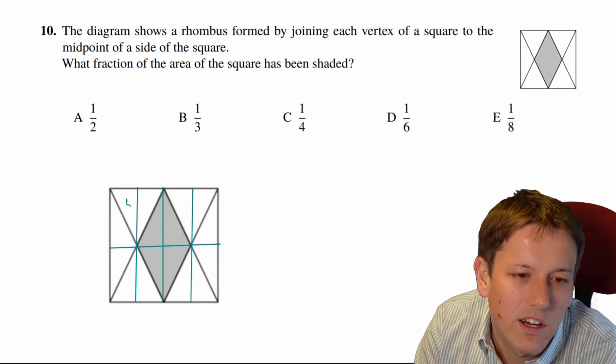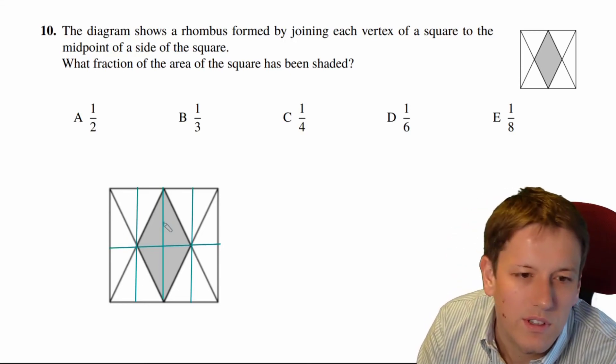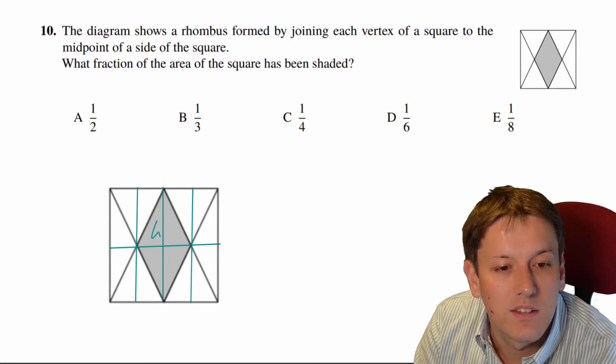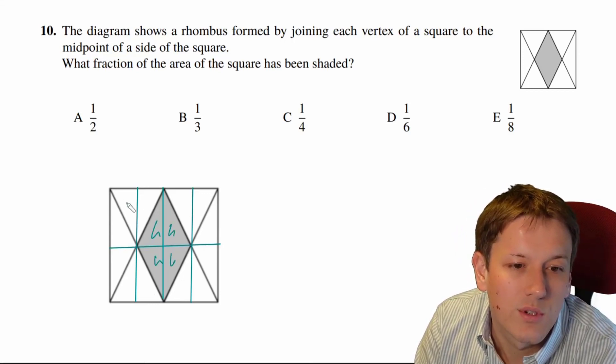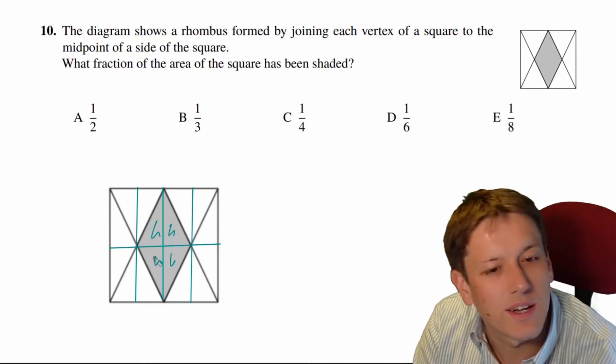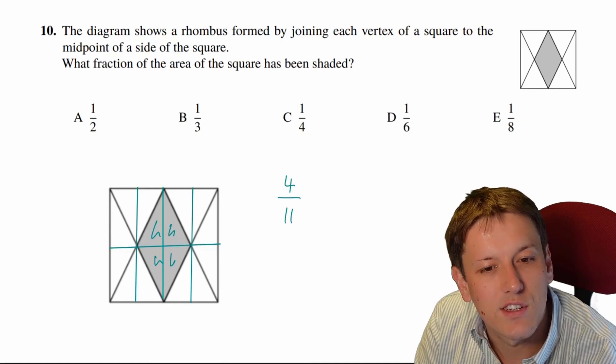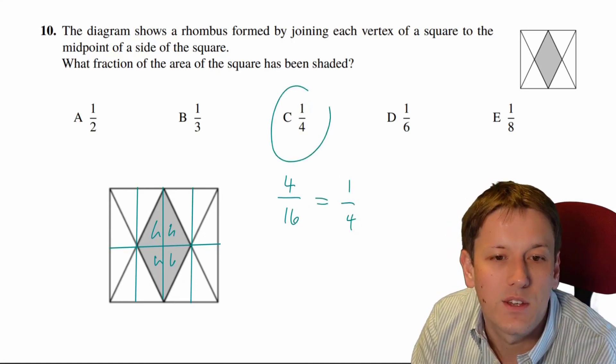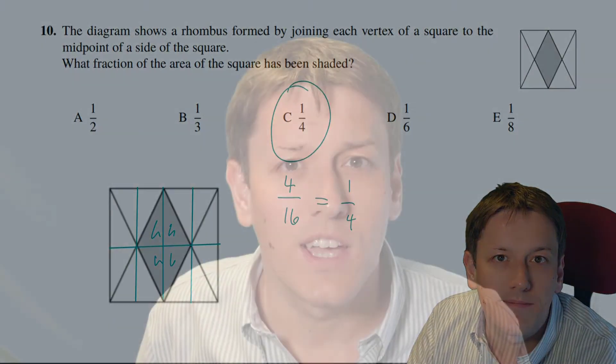You know, like halves of rectangles here that are all the same size. So I can just count how many are shaded. There's 1, 2, 3, 4 out of a total. Well, there's 1, 2, 3, 4, 5, 6, 7, 8 on the top, so another 8 here, so out of 16. So the fraction shaded must be 4 out of 16, which is 1/4, and so the answer here is C, one quarter.